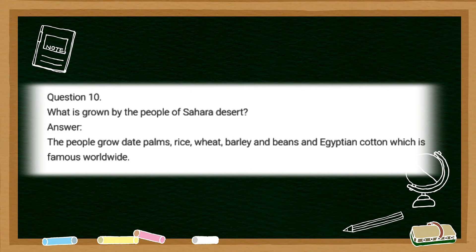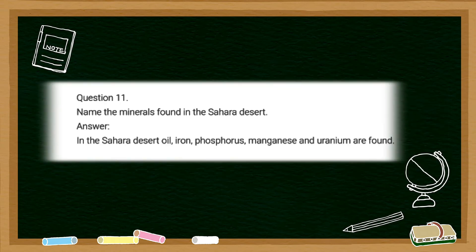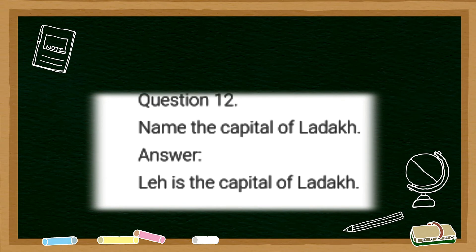The answer is the people grow date palm, rice, wheat, barley, beans, and Egyptian cotton which is famous worldwide. The eleventh question is: name the minerals found in Sahara desert. The answer is in the Sahara desert, oil, iron, phosphorus, manganese, and uranium are found.